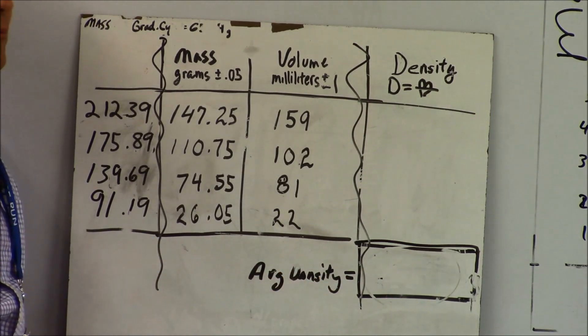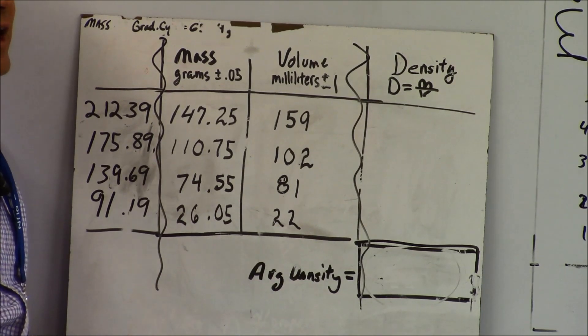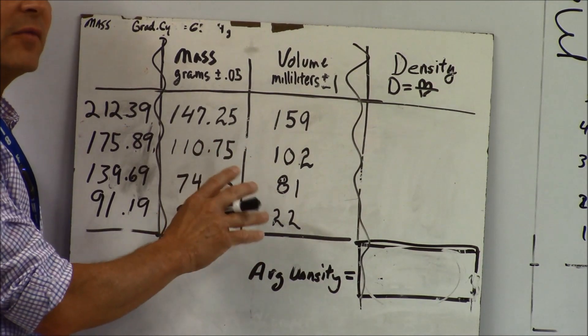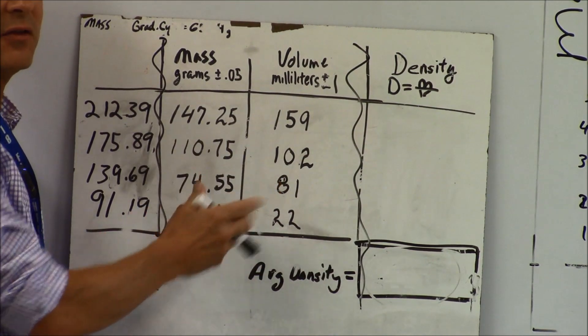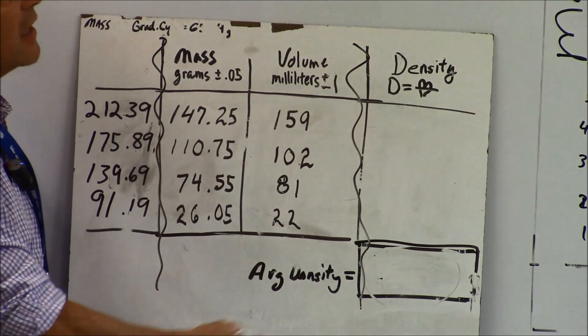It's almost a bad example because it comes out almost too nice and convenient. I don't know how that happened because I totally made these numbers up. I knew kind of what I wanted them to be, but I really just made these numbers up.